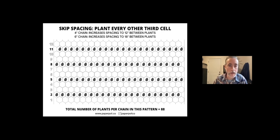And then here's another one that we have available that shows if you wanted to do every third cell, so that could even achieve wider spacing. With a 4 inch chain, that would give you 12 inches between plants, and with the 6 inch chain up to 18 inches between plants.